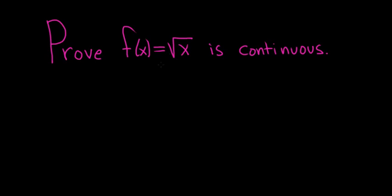In this video we're going to prove that the square root function is continuous everywhere it's defined. This function is defined on the set [0, ∞). First we'll prove it's continuous at 0, and then we'll give a proof to show it's continuous at every positive number. Therefore it will be continuous everywhere in its domain.